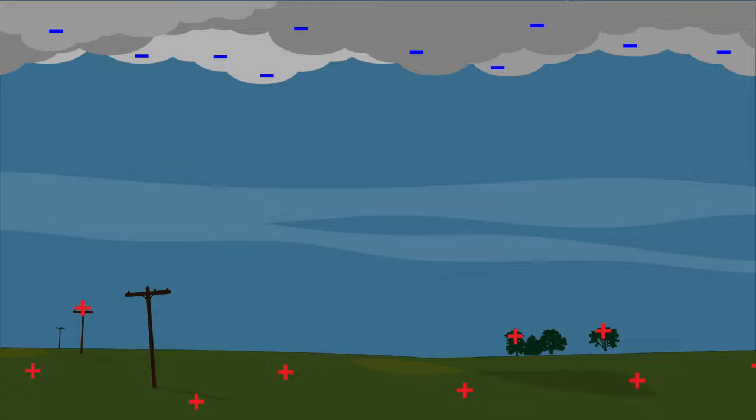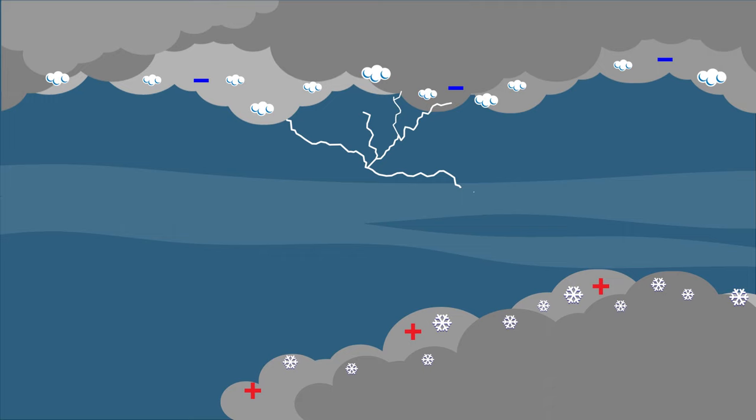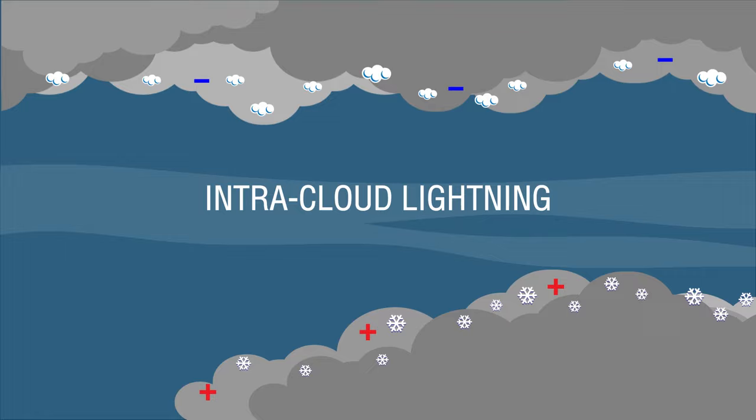Lightning can also stay within a cloud or even travel between two clouds. This happens when lightning travels from a negative charge in one cloud to a positive charge within another cloud. This is known as intracloud lightning.